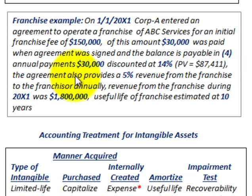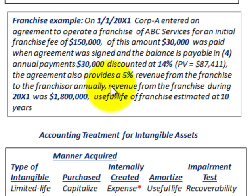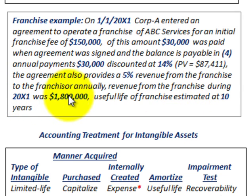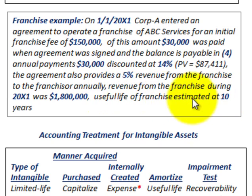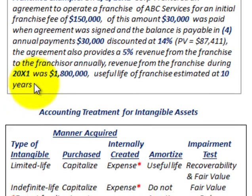The agreement also provides for a 5% fee on franchise revenues to the franchisor annually. Revenue from the franchise during 20X1 was $1,800,000, and the useful life of the franchise is estimated at 10 years.